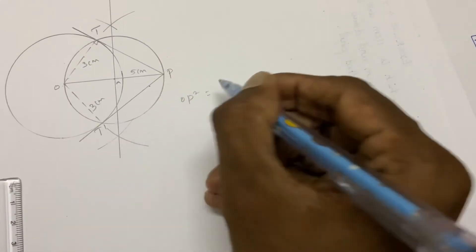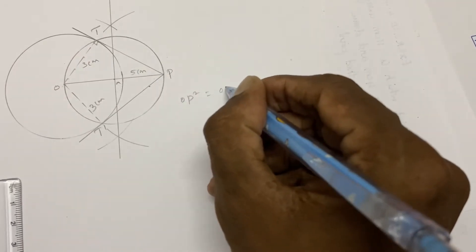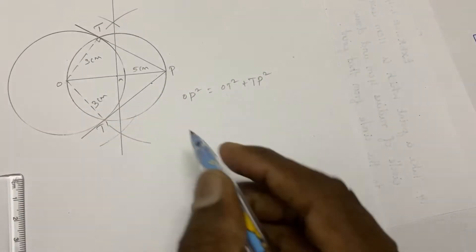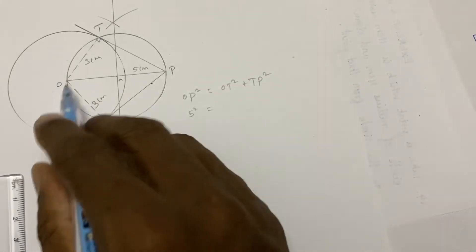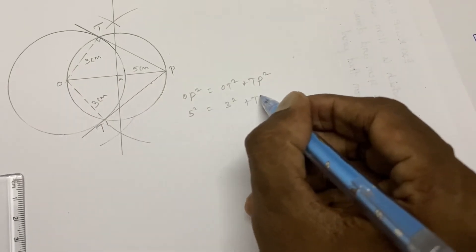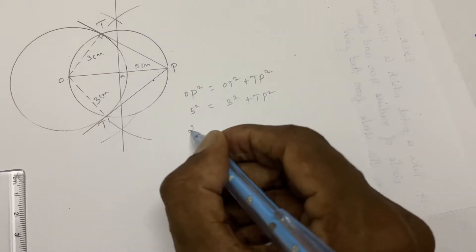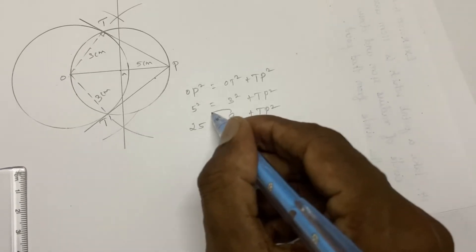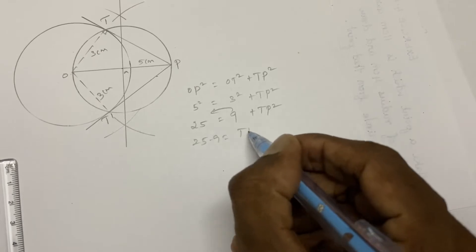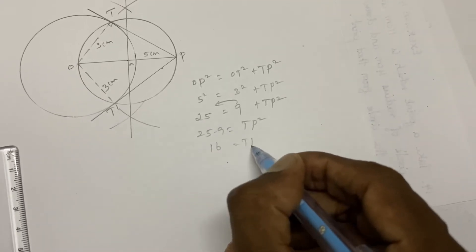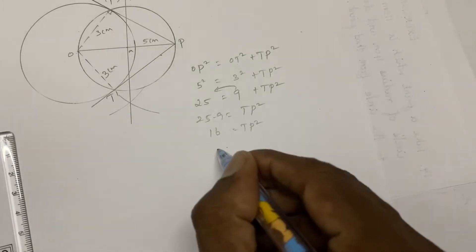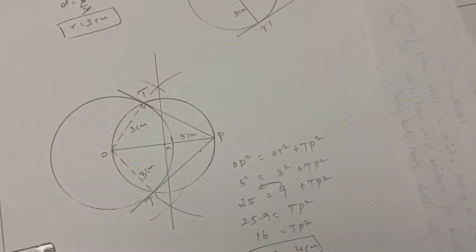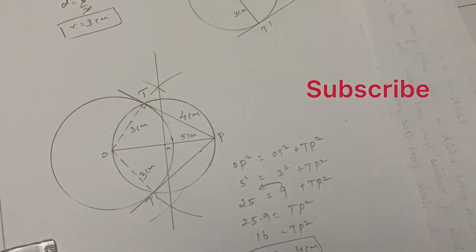Using the Pythagorean theorem: OP² = OT² + TP². Substituting values: 5² = 3² + TP², so 25 = 9 + TP², therefore TP² = 25 − 9 = 16, and TP = 4 centimeters.